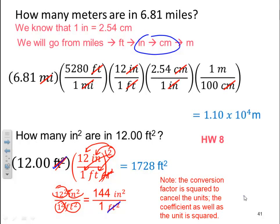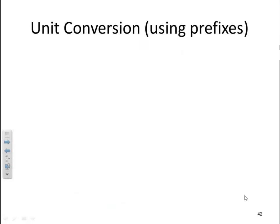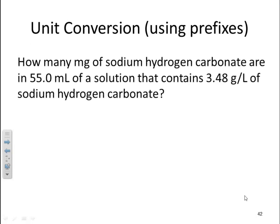Homework eight deals with conversions. We have one more slide in this chapter. This goes back to the prefixes that I mentioned earlier. How many milligrams of sodium hydrogen carbonate are in 55.0 milliliters of a solution that contains 3.48 grams per liter of sodium hydrogen carbonate? So I'm going to take my 55.0 milliliters and I want to convert that into milligrams. Well, to go from a volume to a mass term, we know that we can use density to do that. So then I would multiply by my density, 3.48 grams per liter.